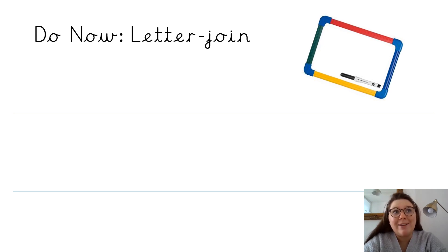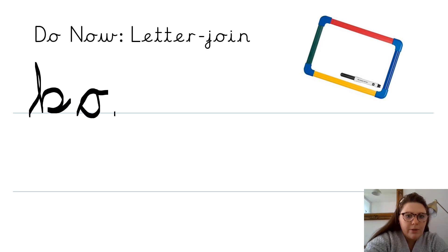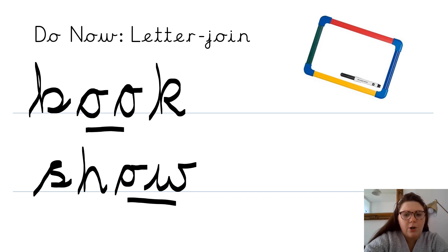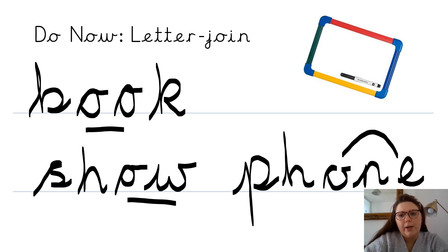I'm in the mood for a bit of a challenge today. So instead of doing words that begin with O, I'm actually going to think of sounds that have the letter O in them. For example, I could write the word 'book' because I know the sound book has got an O - two O's. Or I could write the word 'show' because I know the sound O is in it. Or I could even write the word 'phone' because I know that 'phone home' has got an O in it as well. It's a challenge for you today - you need to think about sounds that have got the letter O in them.